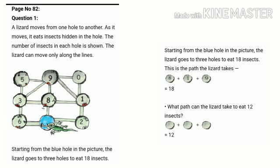Now the next question: what path can the lizard take to eat 12 insects? It has to go to 3 holes to eat 12 insects. Which path will it take? It will take the path starting from 2, then 1, then 9. So 2 plus 1 plus 9 equals 12.